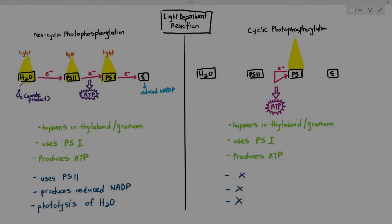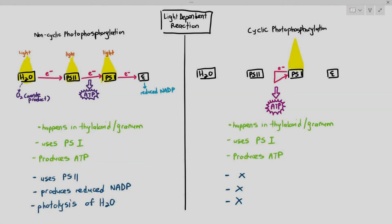In the previous video we talked about the light-dependent reaction, where we looked at two processes: non-cyclic photophosphorylation, which produces ATP and reduced NADP, and cyclic photophosphorylation, which only produces ATP. But no matter what, these products will need to be used in the light-independent reaction.